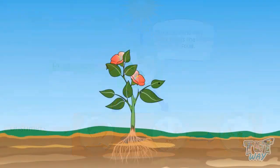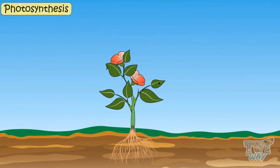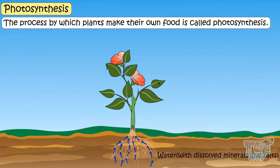Let's see how these plants prepare their own food. The process by which plants make their own food is called photosynthesis. Roots of the plants absorb water from soil that already has many dissolved minerals and salts in it.